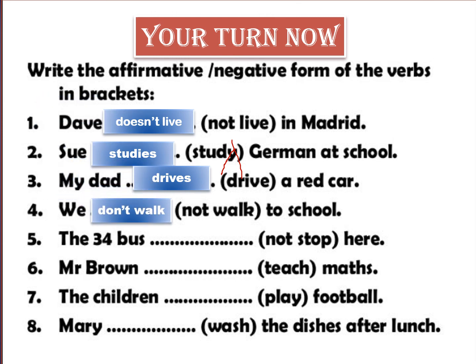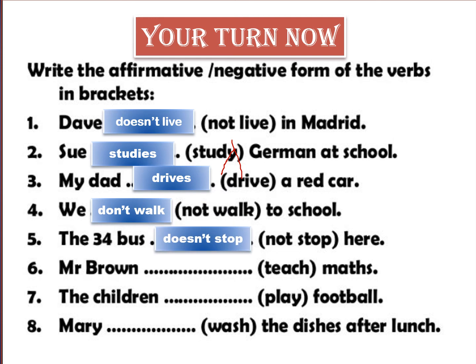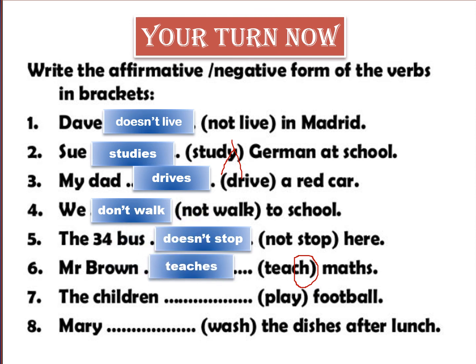Number five: The 34 bus (not) stop here. Negative form. The bus is one — it's 'it' — so it uses DOESN'T: The 34 bus doesn't stop here. Number six: Mr. Brown (teach) math. Mr. Brown likes S, but the verb ends with CH, so we add -ES: Mr. Brown teaches math.